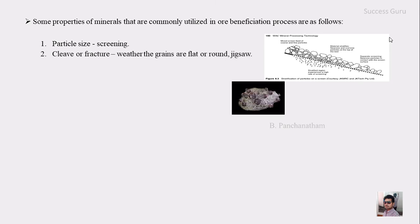The second property is cleavage or fracture. Some minerals have a clear cleavage or a peculiar type of fracture, so by their appearance alone you can separate them from the gang mineral. This property — cleavage and fracture — is used in ore dressing, and according to the cleavage and fracture the grain may look rounded, jigsaw-shaped, or otherwise.